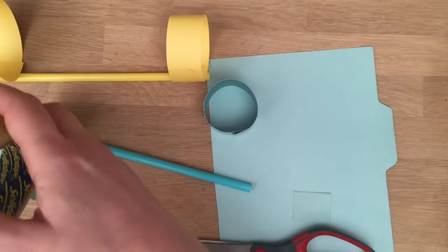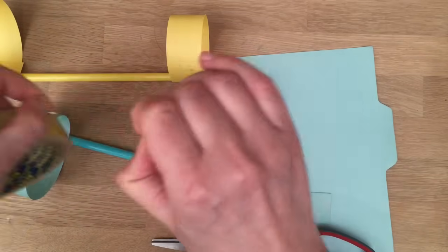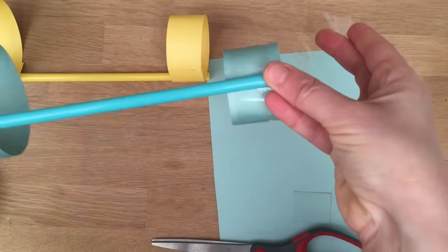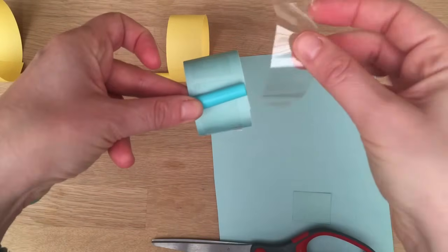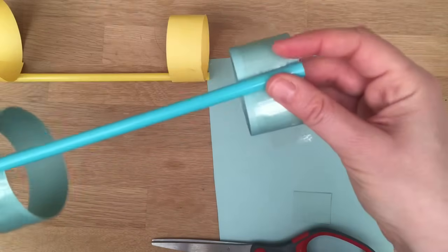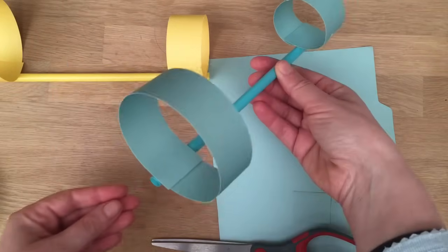And then you do it again on this side. If I can find my tape. Like so. Make sure it's nice and straight. Like so. And there you have your paper airplane.